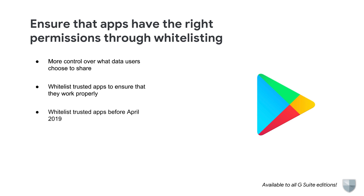Different apps will implement updated app permission controls at various times over the next several months. Some apps will make this change immediately, but the most commonly used apps will implement them after April 2019. To minimize disruption, we recommend you whitelist trusted apps before April.